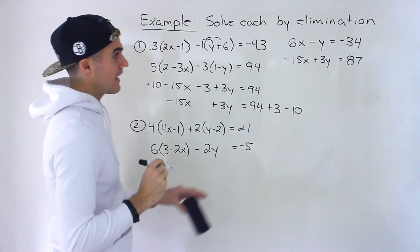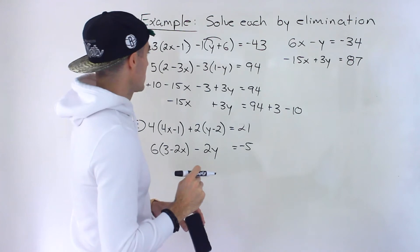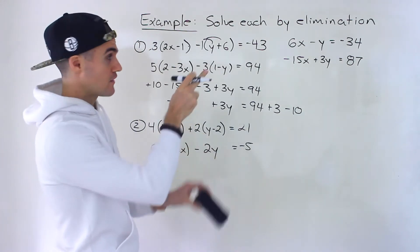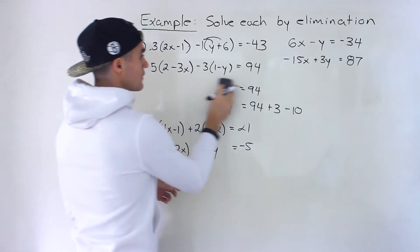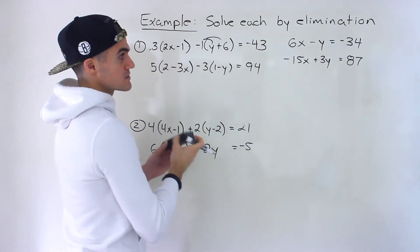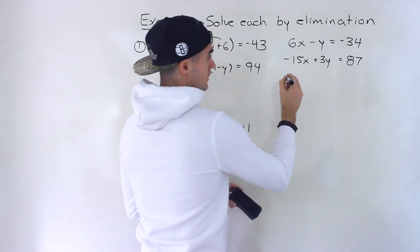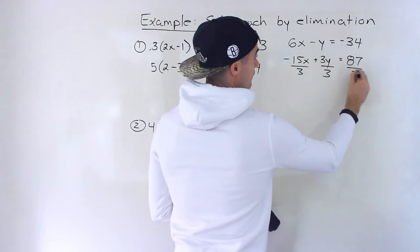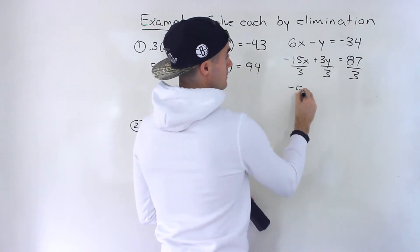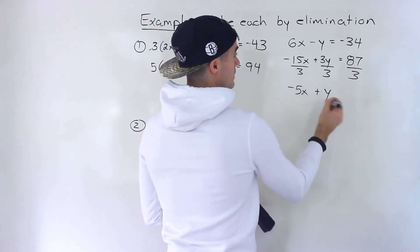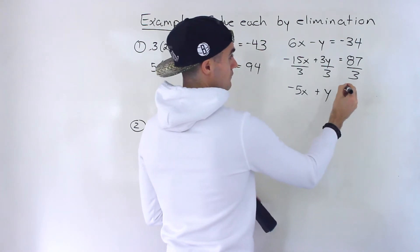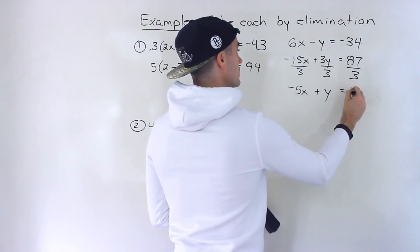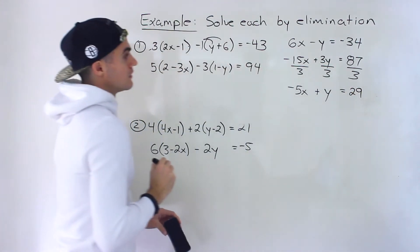And actually we can simplify that because we could divide everything by 3. 87 divides by 3 smoothly. So I'm going to divide this by 3, this by 3, and then this by 3. So this would be negative 5x plus y. And then 87 divided by 3 gives us 29.